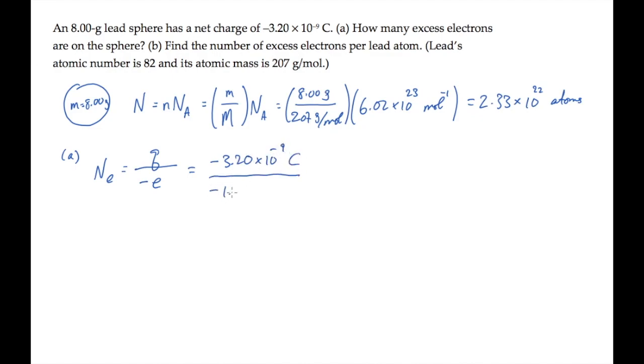That's minus e, where e is the fundamental charge. When we substitute those numbers and calculate, we find there are 2 times 10 to the 10th excess electrons on the lead sphere.